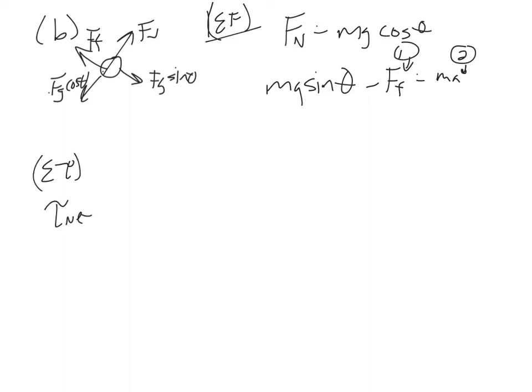So, tau net equals I alpha, you know, because it's rotating. Now, the only force that's actually causing it to rotate is the frictional force. So, FFR equals I alpha, which I'm going to actually replace as A over R. All right, this R cancels out with one of those R's. This R cancels out with the other R, leaving me with FF equals two-fifths MA.